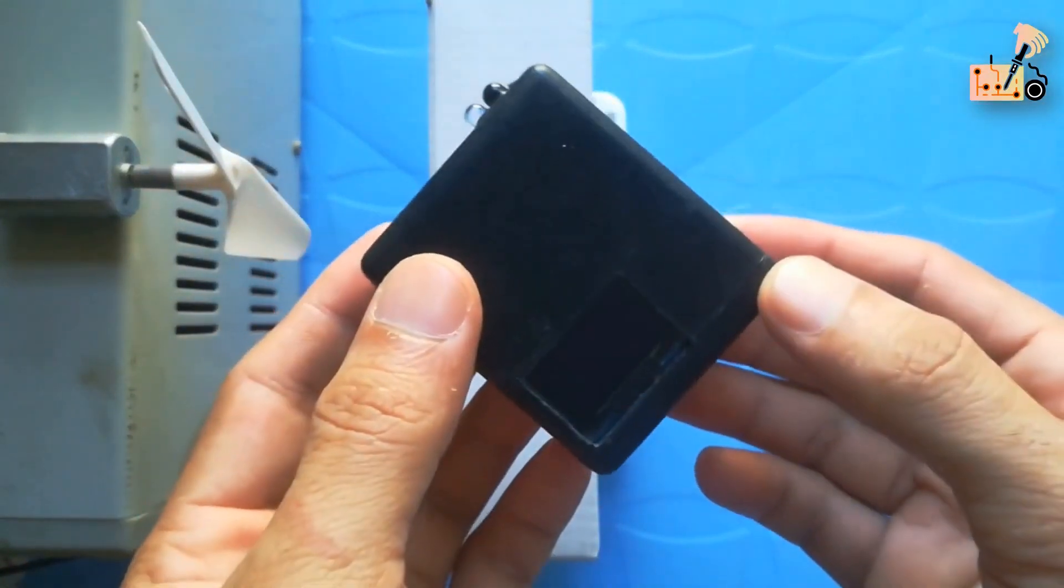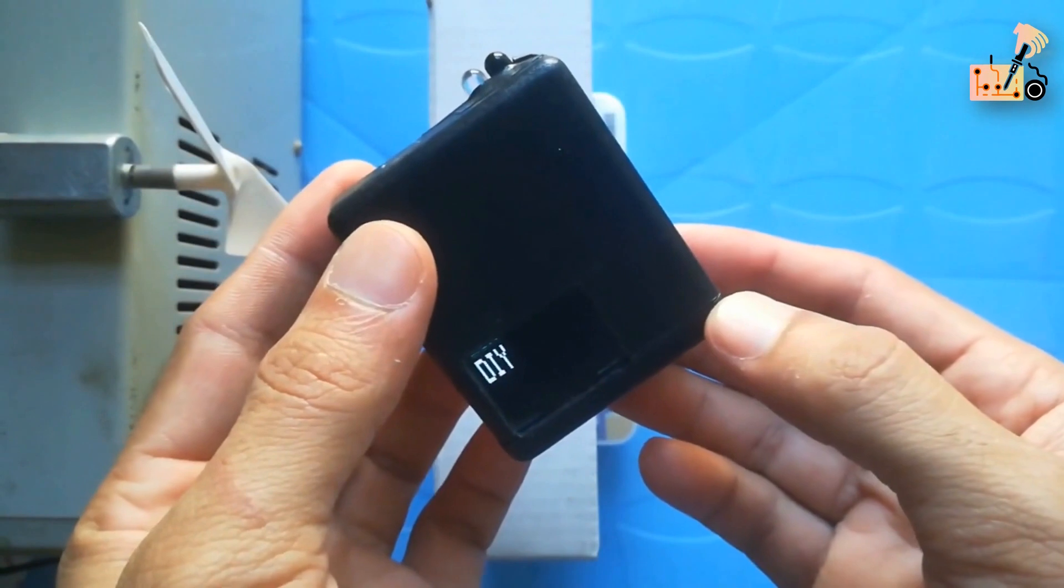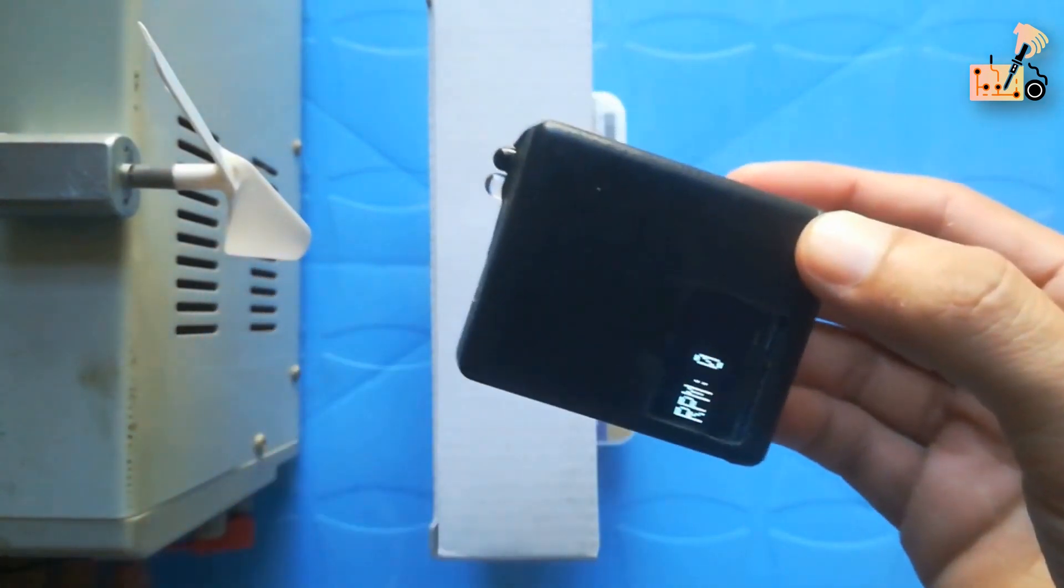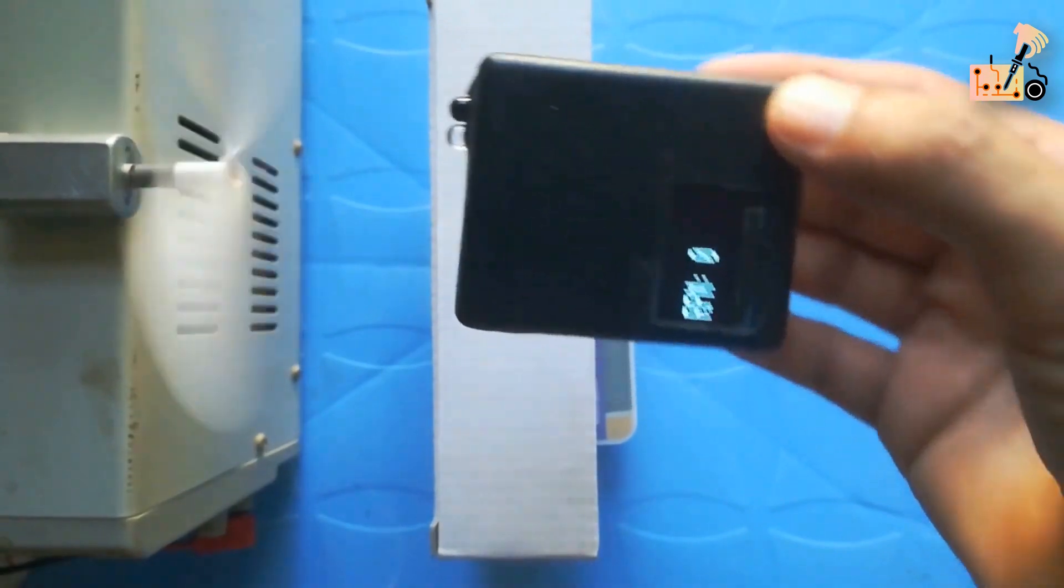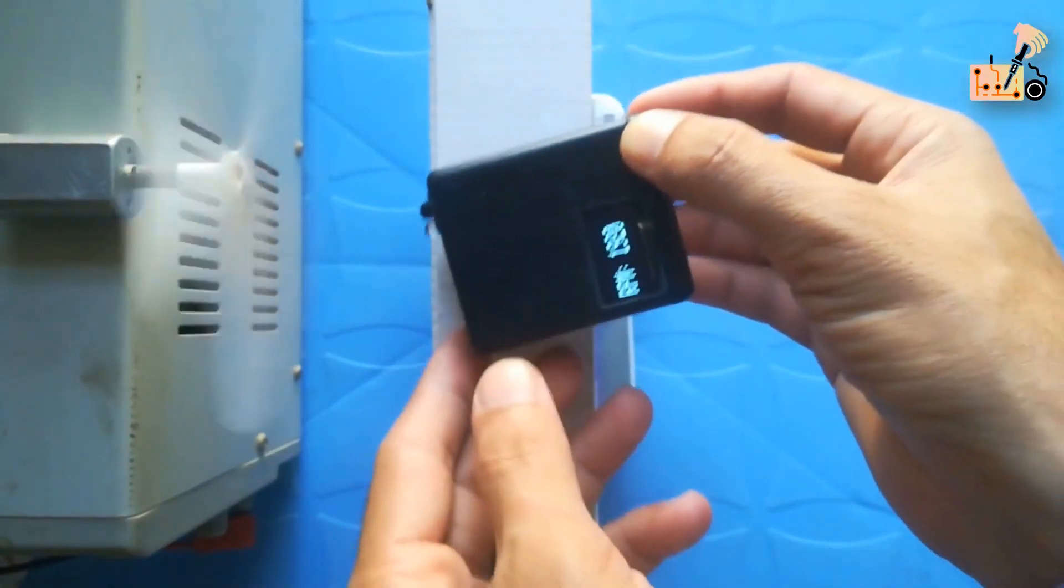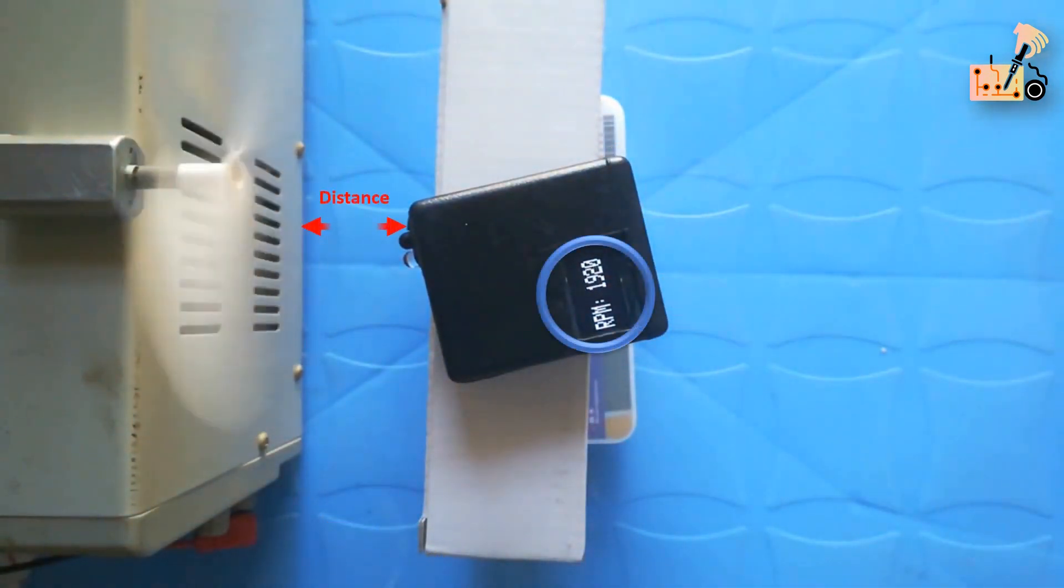Activate the tachometer and begin testing for optimal performance. Apply an IR reflecting sticker to rotating discs for RPM measurement. Maintain a consistent distance of 1.5 to 2 inches from the rotating object, adjusting based on the pot value of the IR module for optimal results.